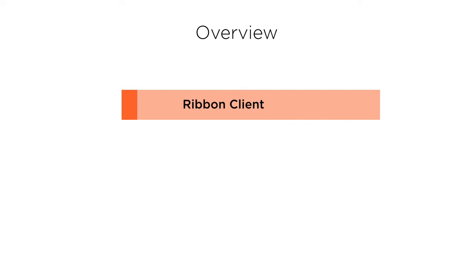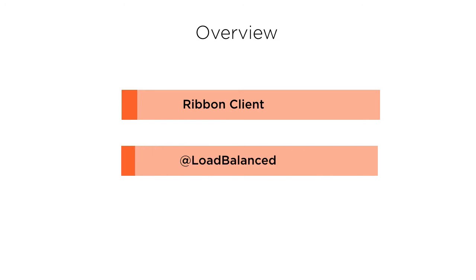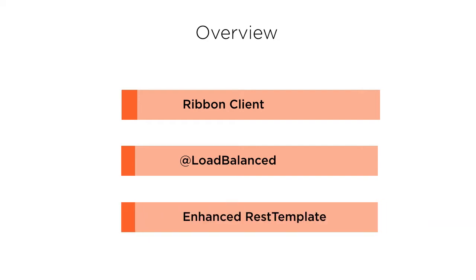Next we will create the Netflix Ribbon client which will provide the client-side load balancing. Spring Cloud supports a Netflix Ribbon client and using the @LoadBalanced annotation it creates an enhanced RestTemplate. This enhanced RestTemplate works with the Ribbon client in the background to provide load balancing, and by default calls the services in a round-robin fashion.